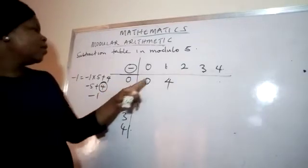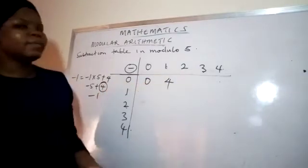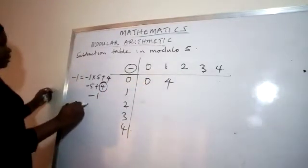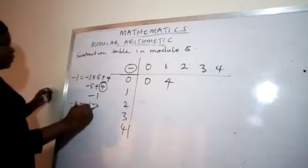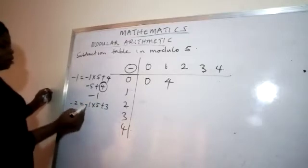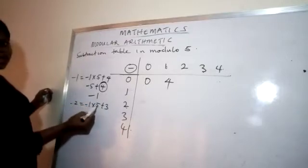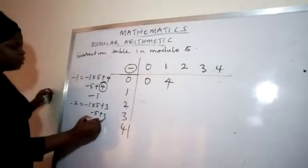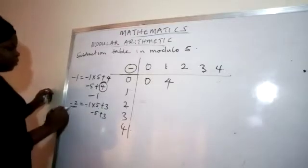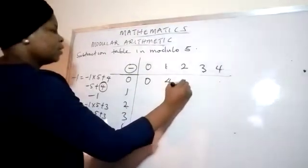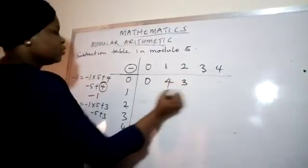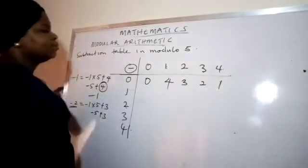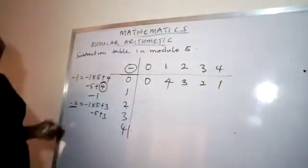0 minus 2 is minus 2. The positive equivalent is: minus 1 times 5 plus 3, because minus 5 plus 3 equals minus 2. So the answer is 3. The next one will be 2, and the next one will be 1.